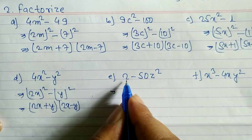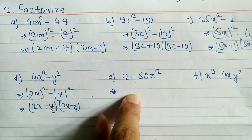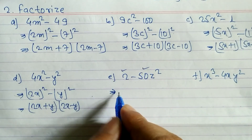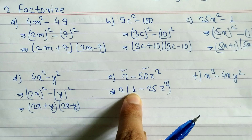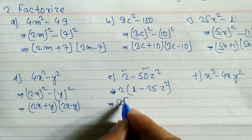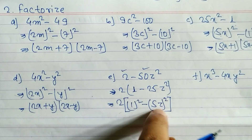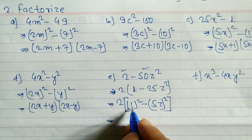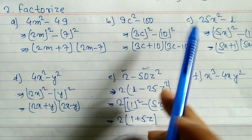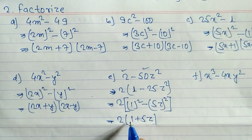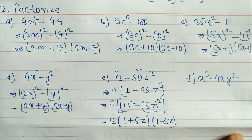For problem e: 2 - 50z². We cannot find perfect square roots of 2 or 50 directly, so first we take out the common factor 2. This gives 2(1 - 25z²). Now 1 = (1)² and 25z² = (5z)², so with a = 1 and b = 5z, we apply the formula to get 2(1 + 5z)(1 - 5z).